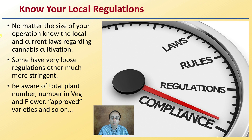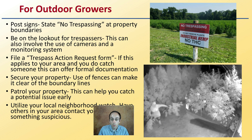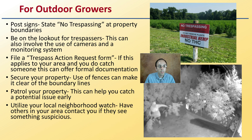Know your local regulations. No matter the size of your operation, know your local and current laws regarding cannabis cultivation. Some have very loose regulations, others are much more stringent. Be aware of the total plant number you have in veg and flower, which varieties are approved, and so on. Make sure you know your laws, rules, and regulations and that you are in compliance with all of them.